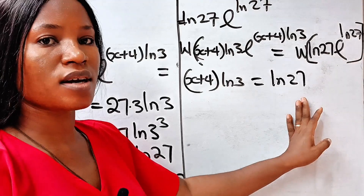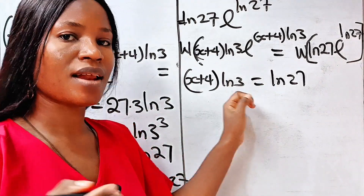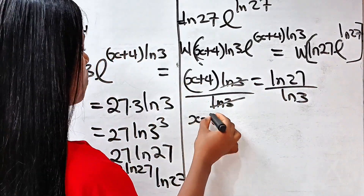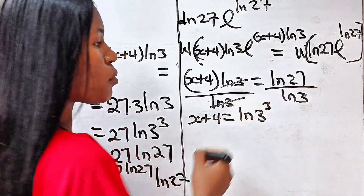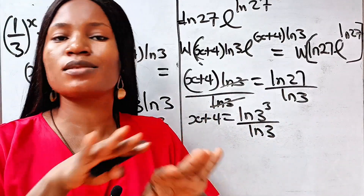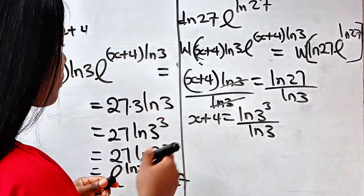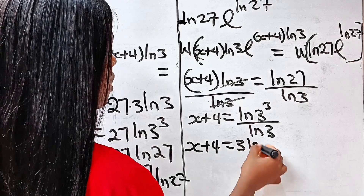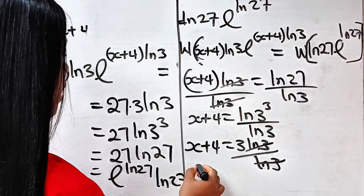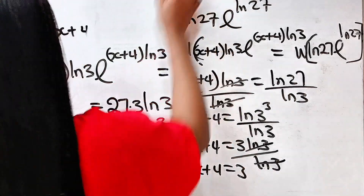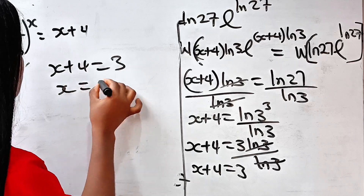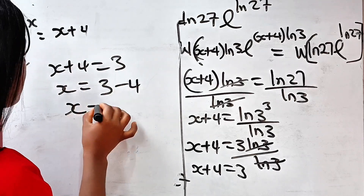Now we're looking for x. Transfer ln 3 to the right-hand side by dividing both sides by ln 3. We get x + 4 = ln 27 / ln 3. Since 27 is 3 to the power of 3, we have ln(3^3) / ln 3. The 3 comes down to multiply, giving 3·ln 3 / ln 3, so ln 3 cancels and x + 4 = 3.